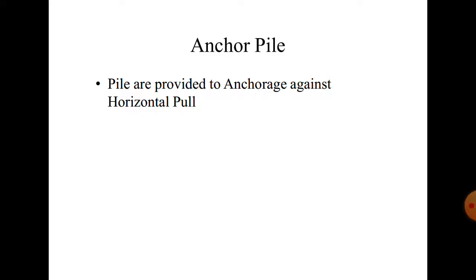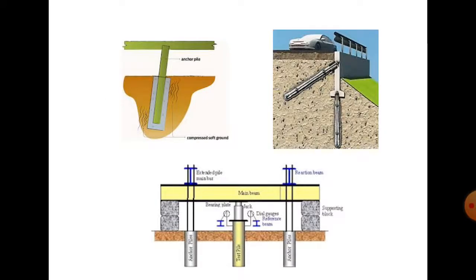Next is anchor pile. Piles are provided to anchor against horizontal pull. The ground is drilled vertically or diagonally, and the anchor pile is fixed. This anchor is connected to a retaining wall or any concrete wall. Anchor piles are inserted both vertically and diagonally at some angle into the ground. Anchor piles are generally made of concrete and anchored in the ground.